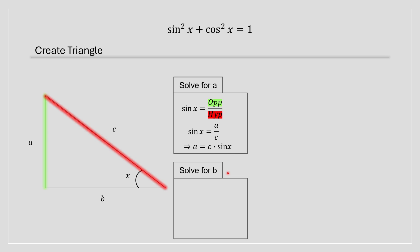We're then going to do the same thing for b. This time we're using cos x equals adjacent divided by hypotenuse. So the adjacent side with respect to x is this side right over here, and the hypotenuse is still the same. We're going to replace b and c in this equation and solve for b. So b equals c times cos x.